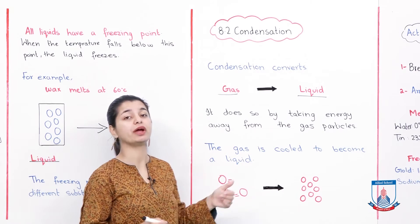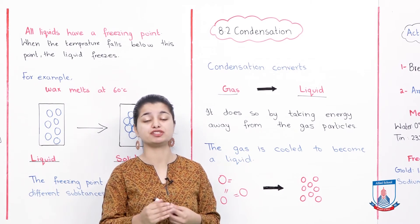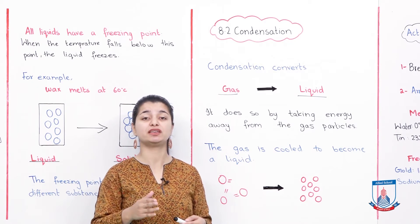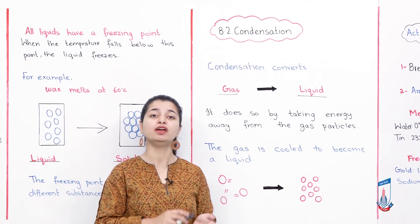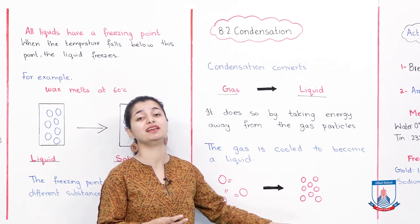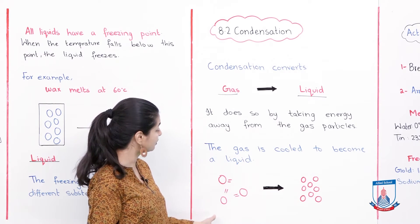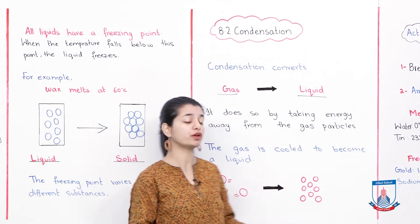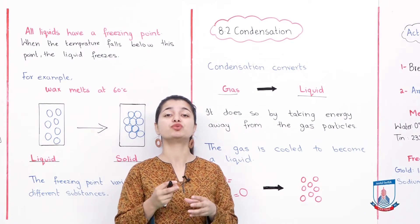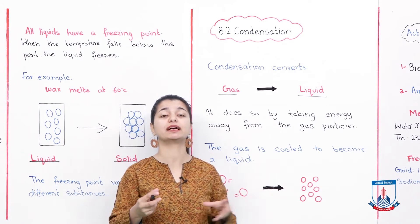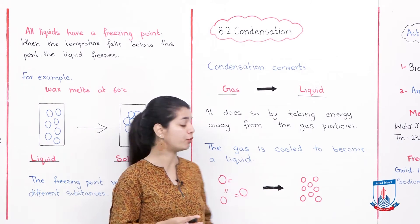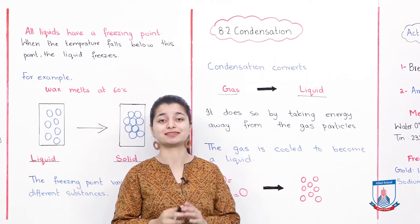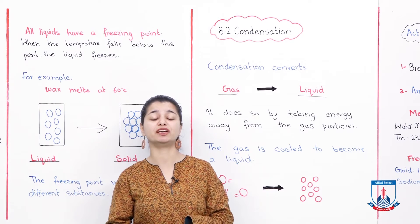Condensation converts gas to liquid. It does so by taking energy away from the gas particles. When you take energy from the gas, the particles reduce their energy, restrict their movement, and come into a liquid form. The gas is cooled to become a liquid — energy in the form of heat is reduced, and when you cool it down, the substance is converted into a liquid. You can see that gas particles are very far away and have a lot of freedom to move, but once cooled they are converted into a liquid.